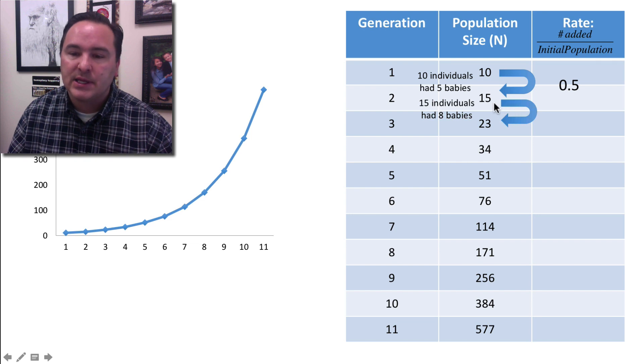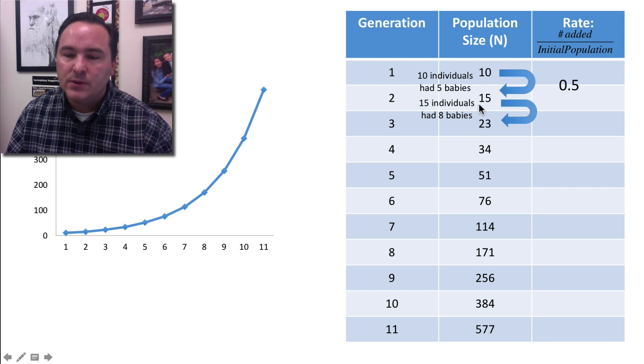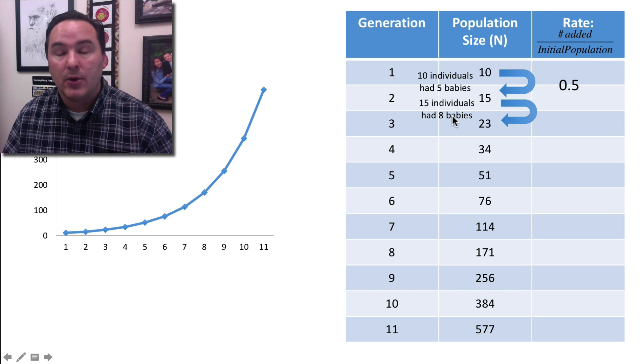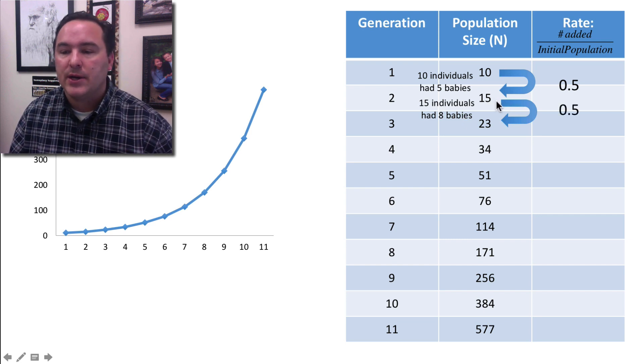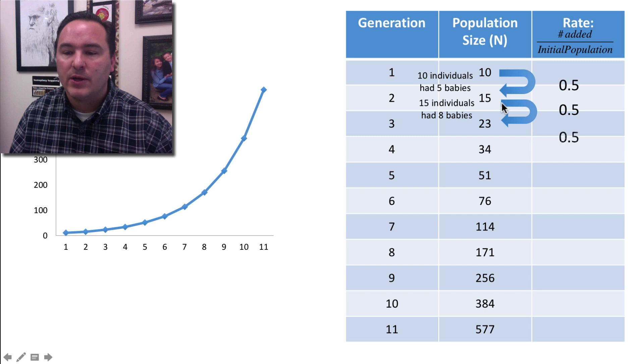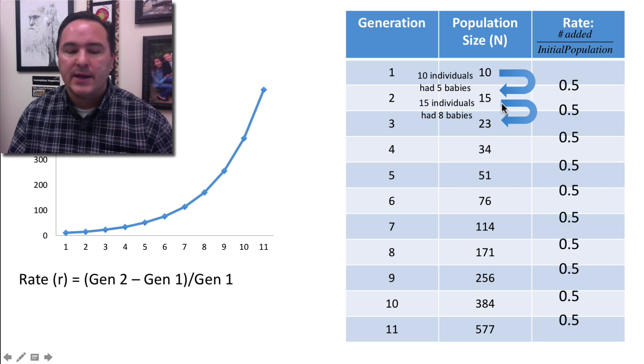If we assume that happens again, where we had 15 individuals and they end up having eight babies survive, that's about half, so you end up with another rate of 0.5. What you see is that over time, the rate is always 0.5.